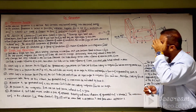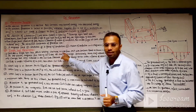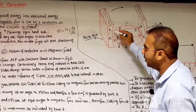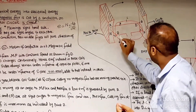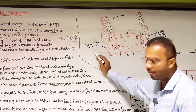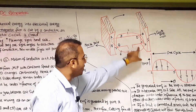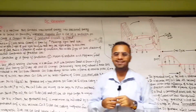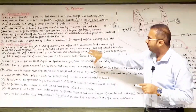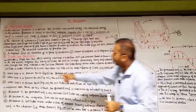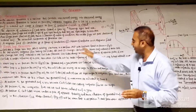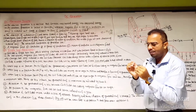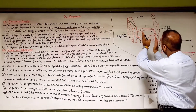Consider a single loop ABCD rotating clockwise in a uniform magnetic field with constant speed. Coil sides AB lie under the influence of the north pole, and CD lie under the influence of the south pole. As the loop rotates clockwise, the magnetic flux linking the coil sides AB and CD changes continuously, and AB and CD continuously change their positions.